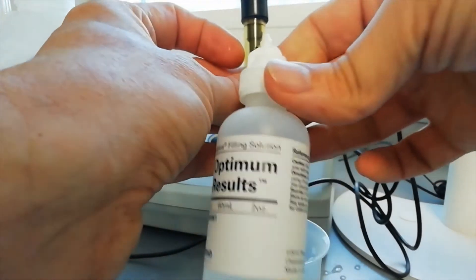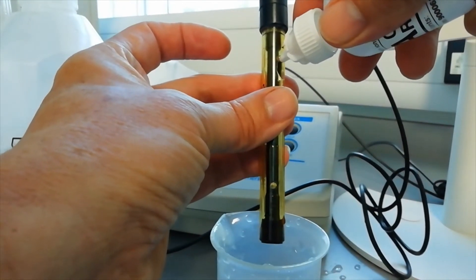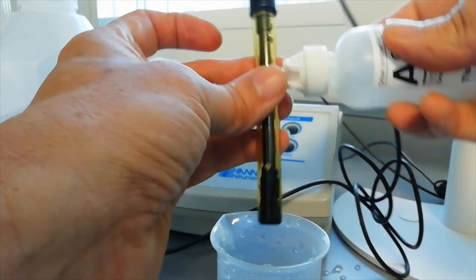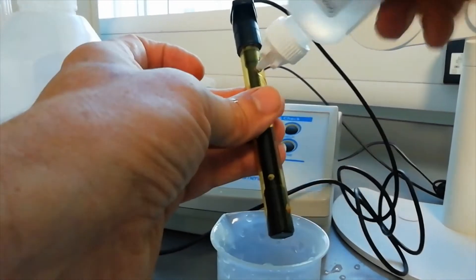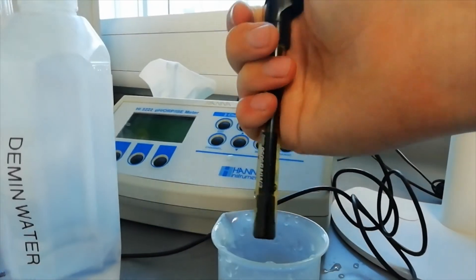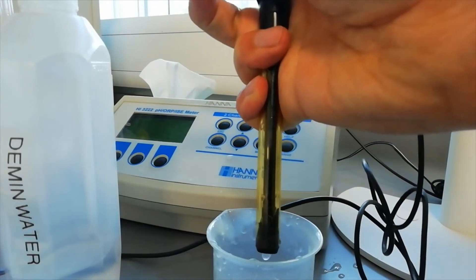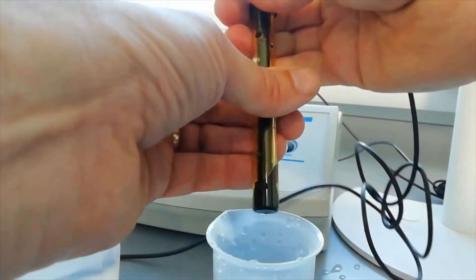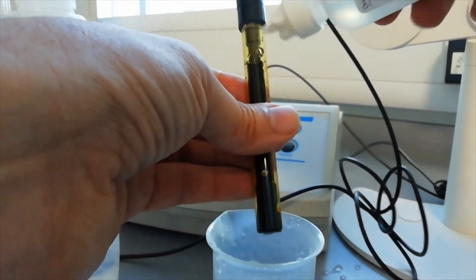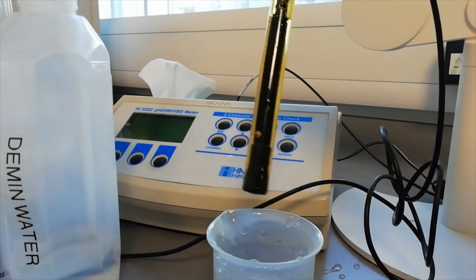With some filling solution, we're going to rinse the electrode first. So we'll half fill the electrode, then depress and let the liquid run out. That will rinse it. Then we fill it up to the hole, and that's it. Job done.